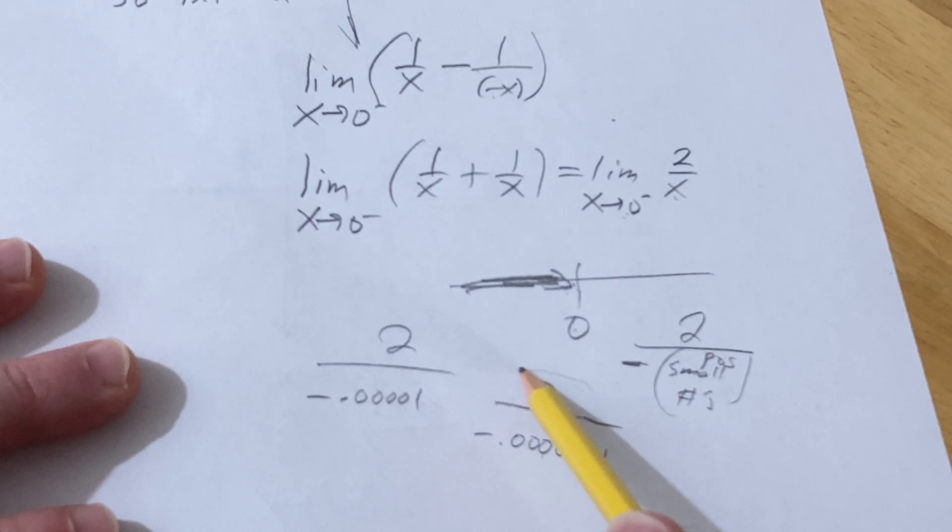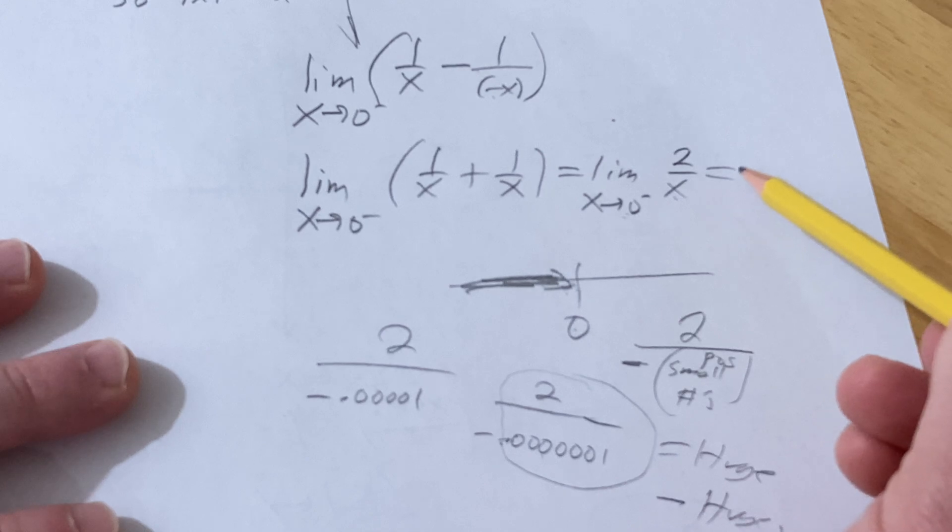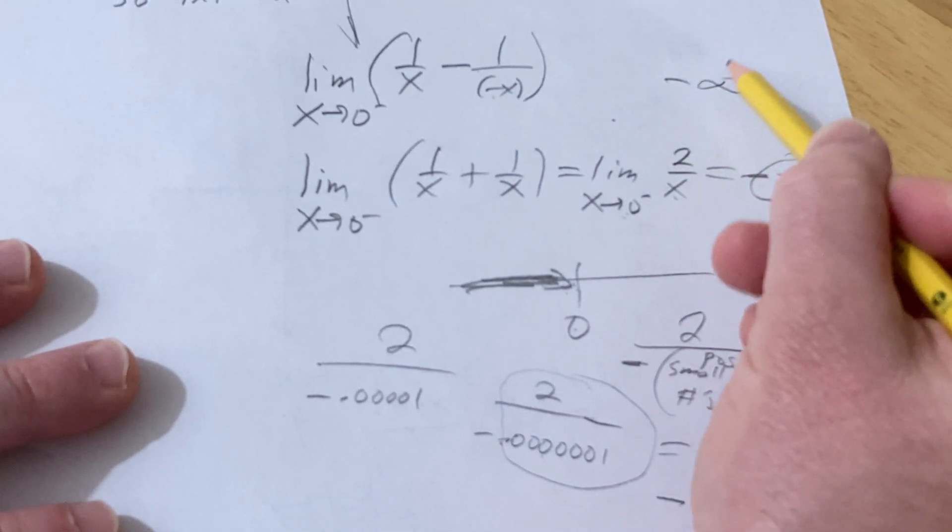So these numbers here, without the negative, it would be really huge. But there's a negative here, so it's going to be negative and huge. So basically this is approaching negative infinity. That's one way to do it, so the answer here is negative infinity.